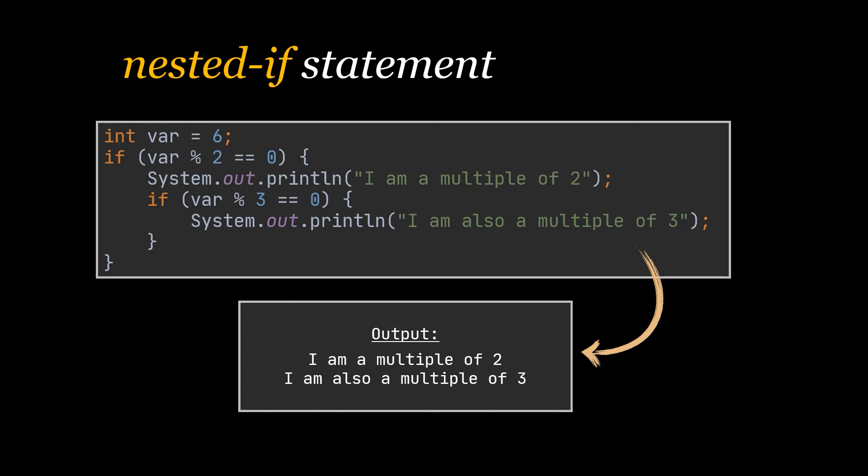But if and only if this variable is a multiple of two, could we go ahead and check if it is also a multiple of three, which in our example is indeed the case. If the variable provided was three or nine, none of these two sentences will be shown on the screen, even though three and nine are both multiples of three.